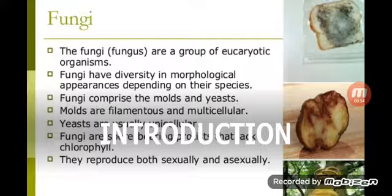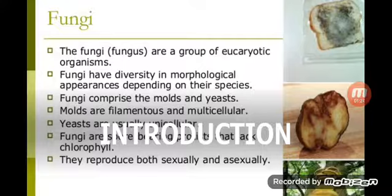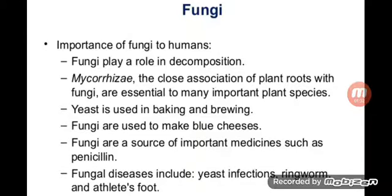Fungi have diversity in morphological appearance, meaning they have different shapes and sizes. The two types most discussed in food microbiology and food preservation are molds and yeasts, as they are directly related to our field. Molds are filamentous and multicellular, while yeasts are unicellular with one nucleus. They reproduce both sexually and asexually.